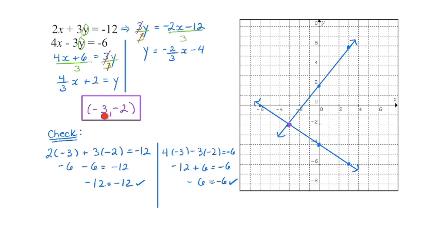Negative 3 is my x-coordinate, so I'm going to check by substituting it back in for x in both of these equations. Negative 2 is my y-coordinate, so I'm going to substitute that in for y in both of these equations. If the left side equals the right side on both, then we know we've satisfied the system. We have the correct solution.